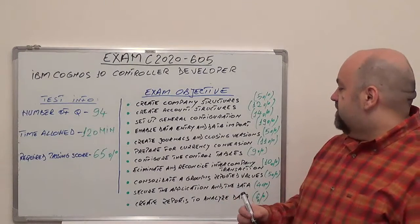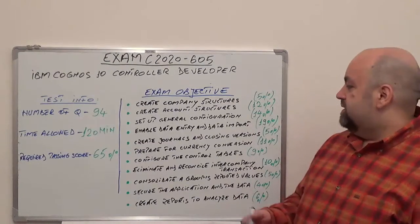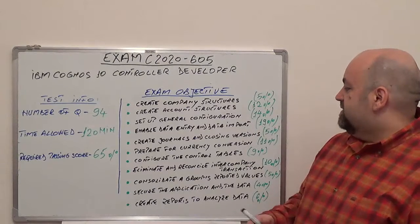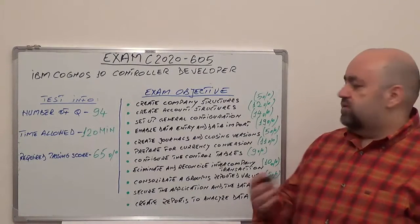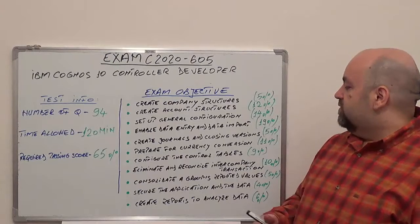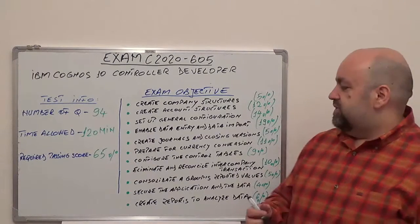Create journals and closing versions, 5% of total questions. Prepare for currency conversion, 11% of total questions. Configure the control tables, 9% of total questions.